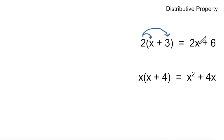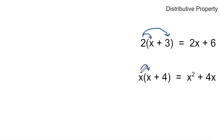So this is the distributed 2 here. We can also have an x outside of the parentheses, and in this case we're going to distribute the x. In other words, we're going to multiply this x times the first term, which is also an x. x times x gives us x squared. And when we distribute this x across the second term inside the parentheses — the 4 — x times 4 gives us 4x. So this x distributed across both terms inside the parentheses gives us x squared plus 4x.